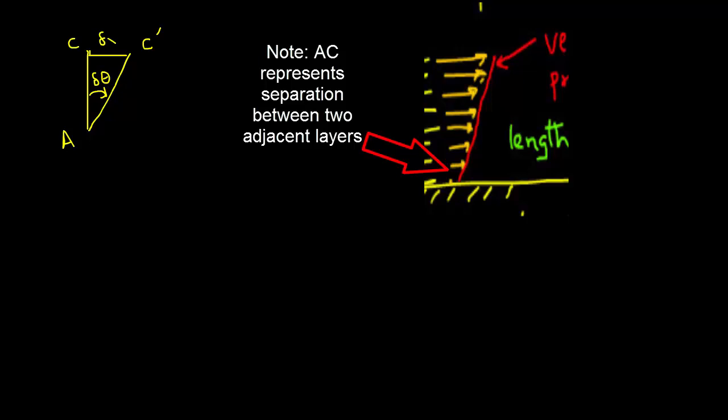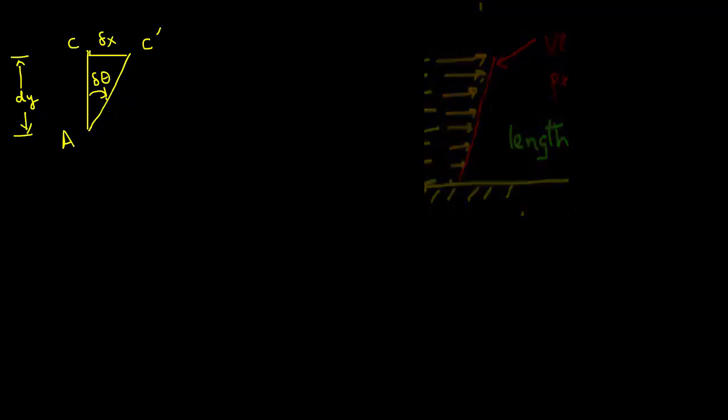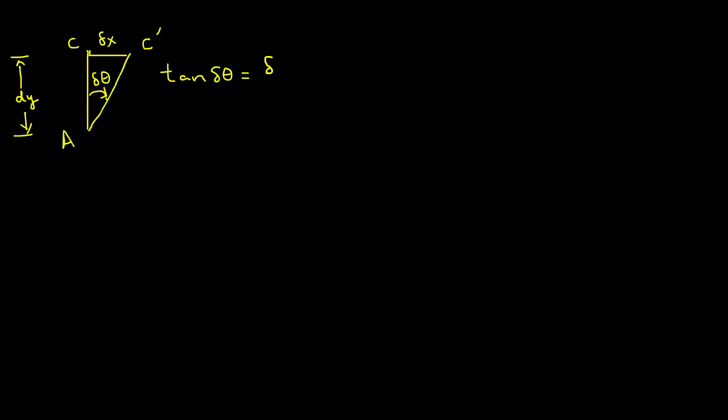So the vertical line AC is now deflected to AC dash. That angle of deflection is delta theta. Also, let's say that the distance between A and C is dy. So now you know from your trigonometry that tangent of delta theta is delta x divided by dy.